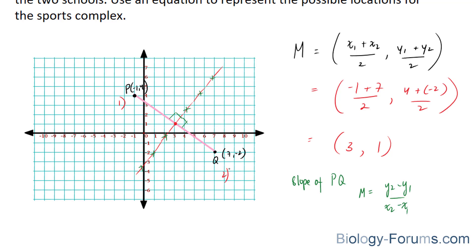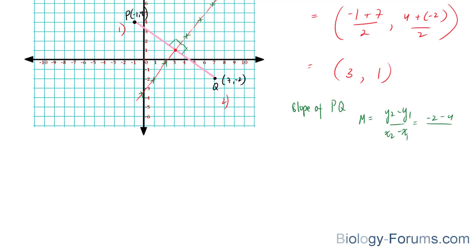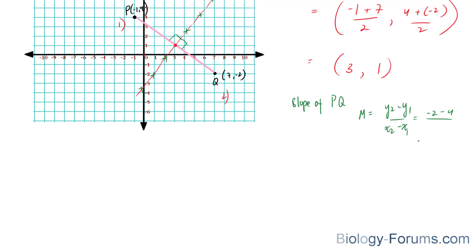And our y2 value is negative 2, and our y1 value is 4, so negative 2 minus 4, over x2, which is 7, minus negative 1. And we end up with negative 6 over 7 plus 1, which is equal to 8, and that is equal to negative 3 over 4, and that makes sense because this slope is going downwards, and this is a negative number, so we can assume that it is correct.